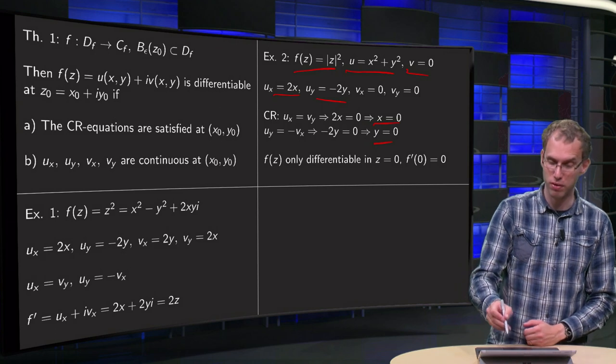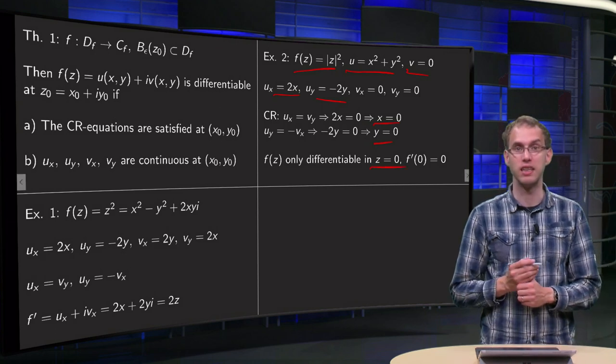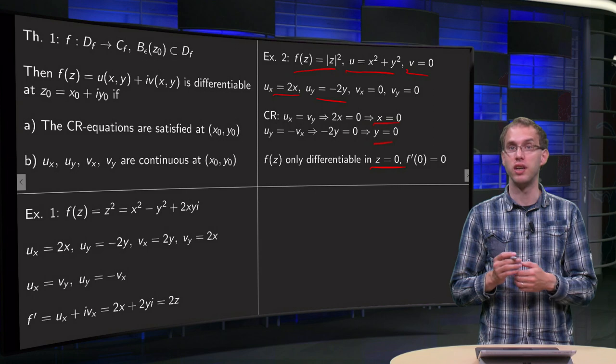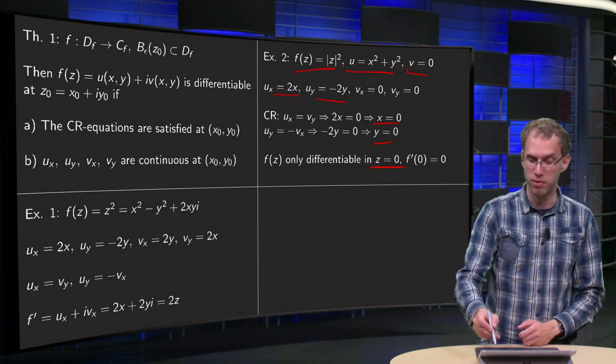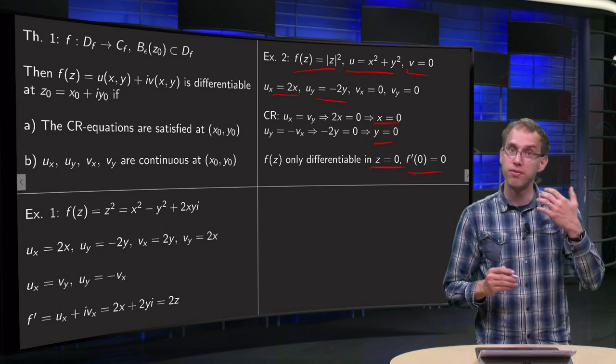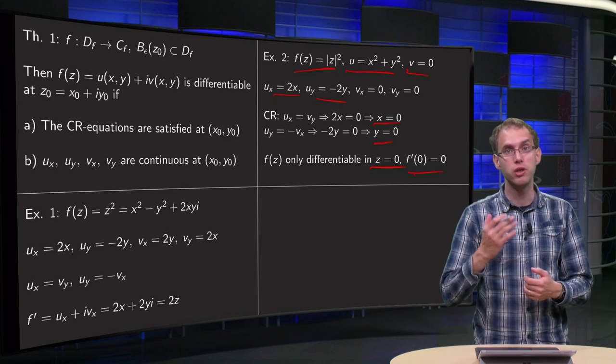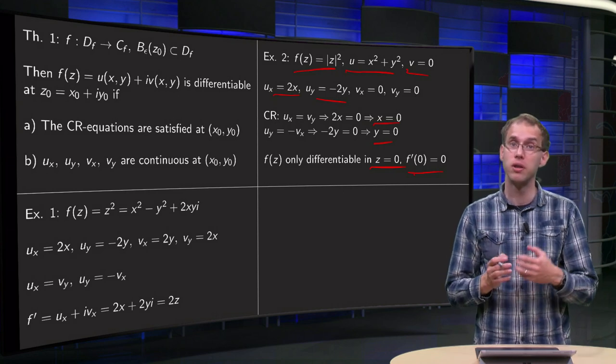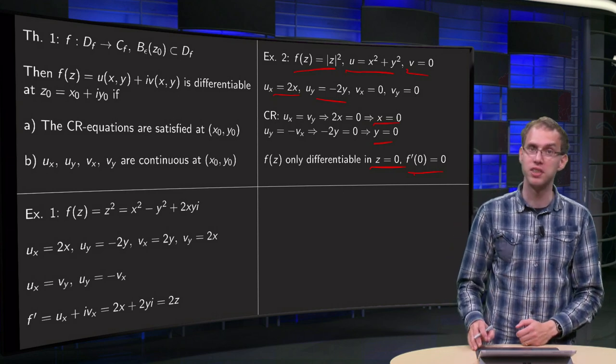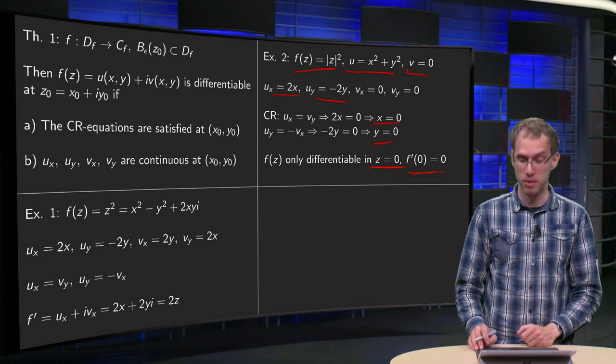So f is only differentiable at z equals 0. And there ux and vx are both 0, so f prime equals 0. We already found this using the definition, but here you see that you can find it as well using the theorem and the Cauchy-Riemann equations. The latter is usually a bit easier.